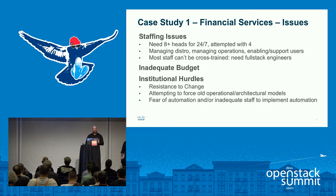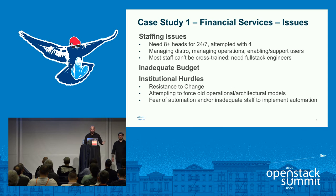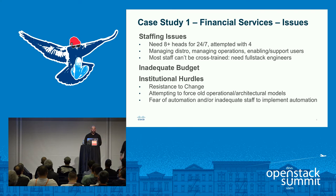They found they couldn't just cross-train VMware admins to be OpenStack admins. To be an effective OpenStack admin, you basically need to be a full-stack engineer — with admin skills, at least light development skills, the ability to read and troubleshoot Python, plus security, monitoring, and storage knowledge. That broad skill set is not generally widely present within an organization. They needed to bring in outside talent, and that outside talent expected salaries basically twice what they paid their normal admins.